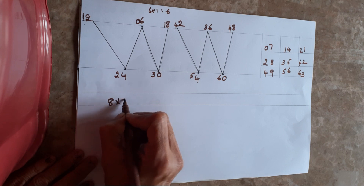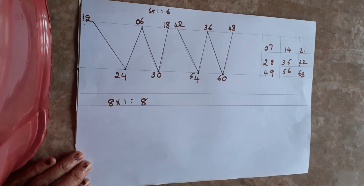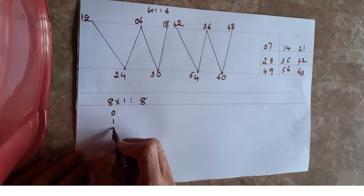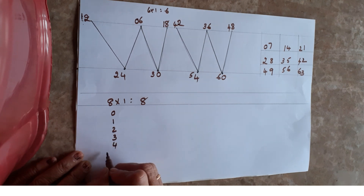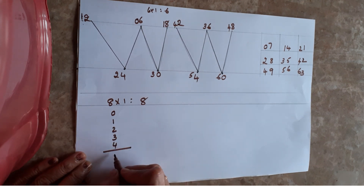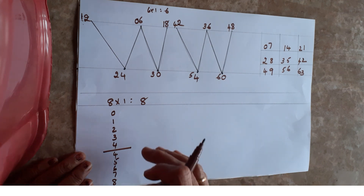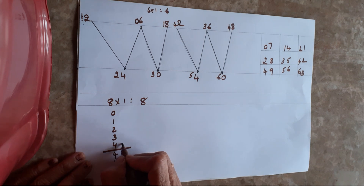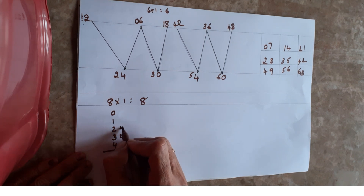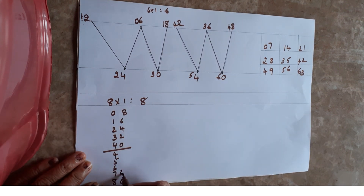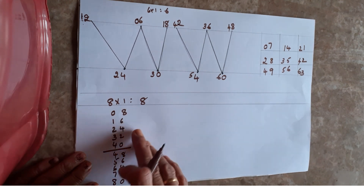For the eighth table, write zero, one, two, three, four, then draw a line, then write four, five, six, seven, eight. Now write the even numbers from the bottom going up: zero, two, four, six, eight — same way write zero, two, four, six, eight on the other side. You will get the 8 table: 8 ones are 8, 8 twos are 16, 8 threes are 24, and so on.